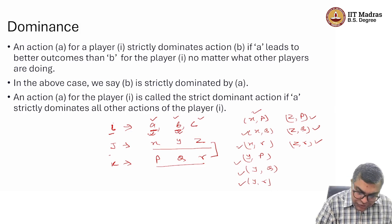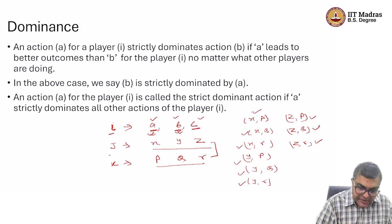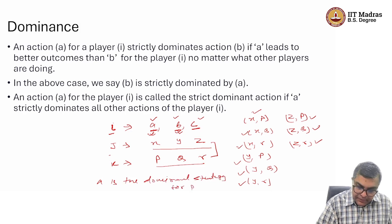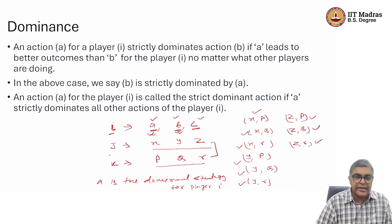If A also strictly dominates C, no matter what combination the other players are playing, then we say that A is the dominant strategy for player I. Similarly, we had also defined weak dominance. I urge you to go back and revise — it is a very similar concept.